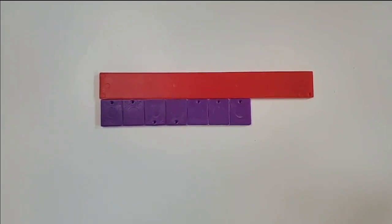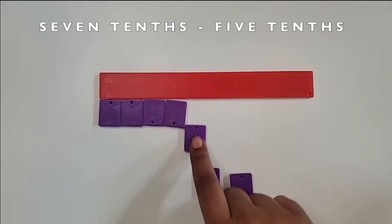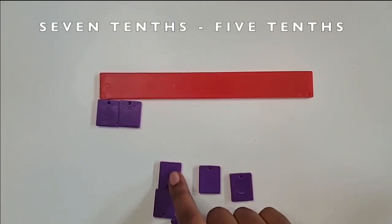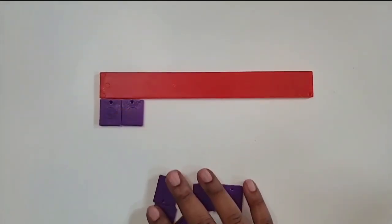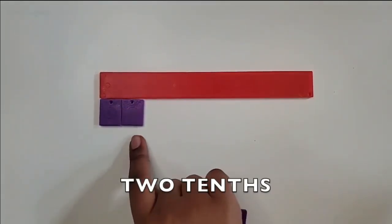And I'm going to subtract five tenths. I have seven tenths and I'm going to subtract five. One, two, three, four, five. How many tenths are remaining? Two tenths.